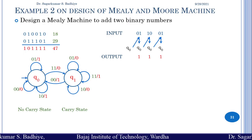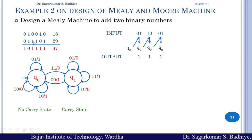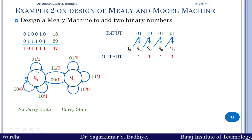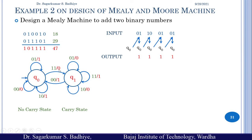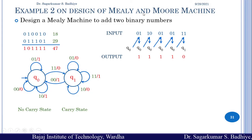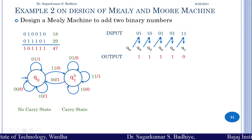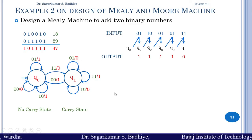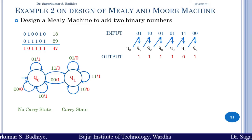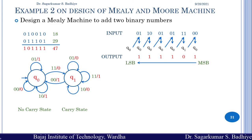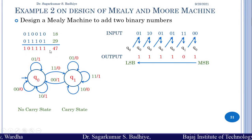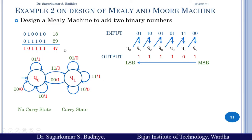The next input is again 01 — in q0 we produce output 1 and stay in q0. The next input is 11 — in q0 with input 11, we transition to q1 and produce output 0. Now in q1, the last input is 00 — we produce output 1 and move back to q0. Reading the output from MSB to LSB, the complete output is 101111, which is the binary equivalent of 47 in decimal.